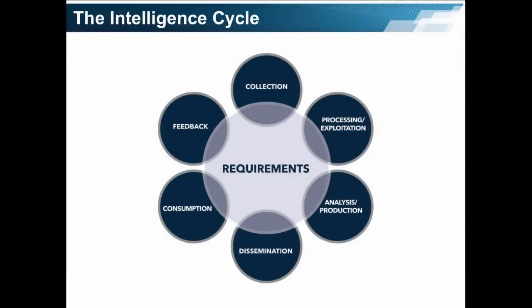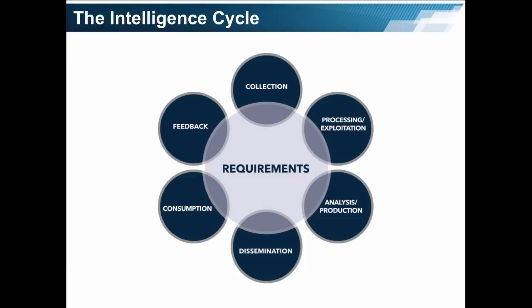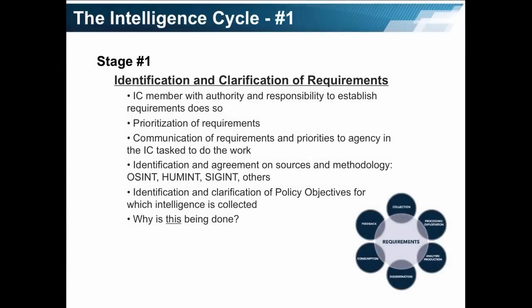In this graphic, you see the seven stages of the intelligence cycle. The circle in the center with requirements is to emphasize that all of the other stages hinge on the requirements. Stage 1: identification and clarification of requirements. These are done by an IC member with authority and responsibility to establish the requirements. That individual prioritizes the requirements and communicates them and the priorities to the agency within the IC tasked to do the work. It also identifies the sources and methodology, such as OSINT, HUMINT, SIGINT, and others, making sure that the sources and methodology are in agreement. It also identifies and clarifies the policy objectives for which the intelligence is collected, and critically, why the intelligence is collected.